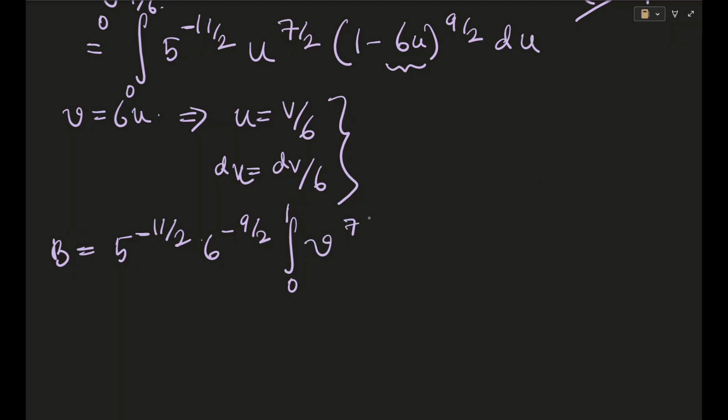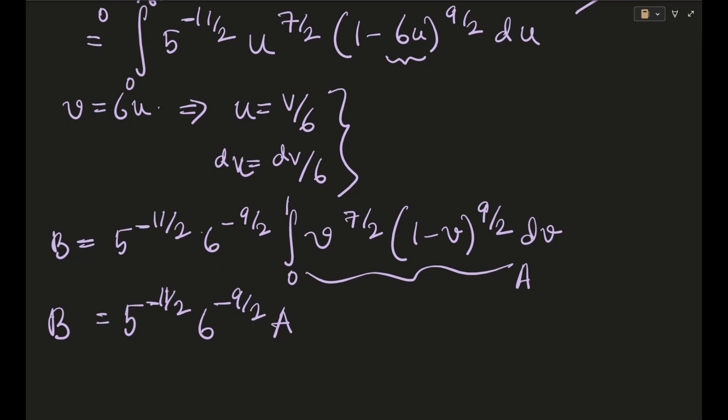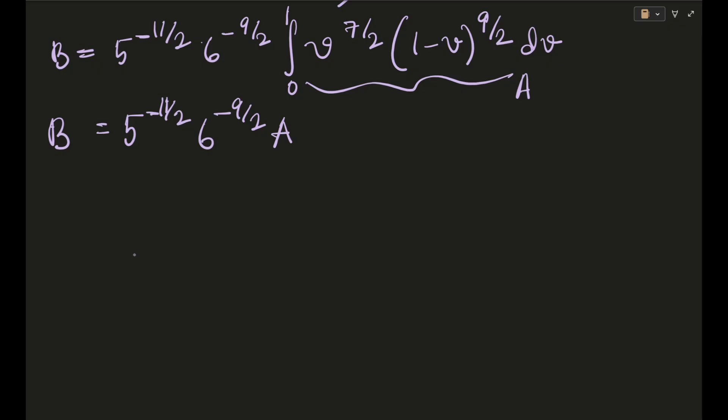So B will become after this thing 5^(-11/2), this will become because it's 9/2 so 6^(-9/2) integral it will become 0 to 1, the limits will obviously be changed, v^(7/2) into (1-v)^(9/2) dv. So from here you will get B as 5^(-11/2) 6^(-9/2) and you can perfectly see this part is nothing but your A because the variable doesn't matter at all right. So this is 6^(-11-9/2) 5^(-11/2) into A.